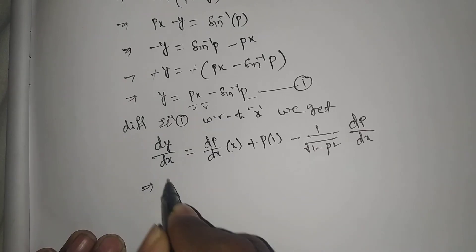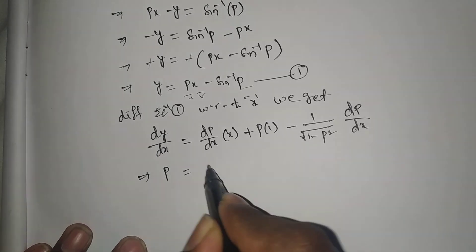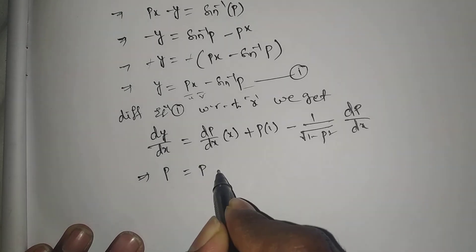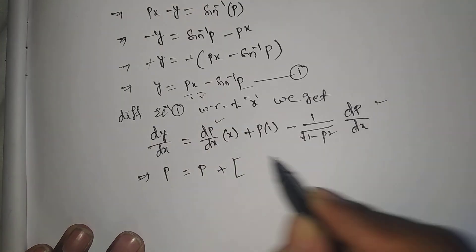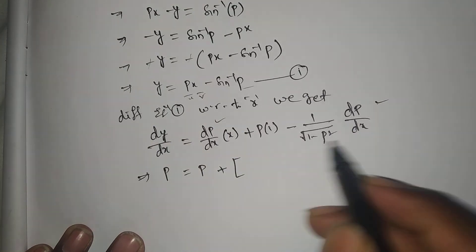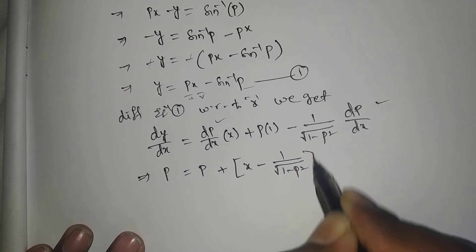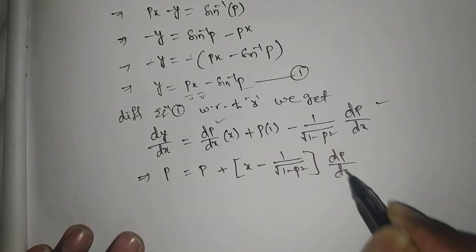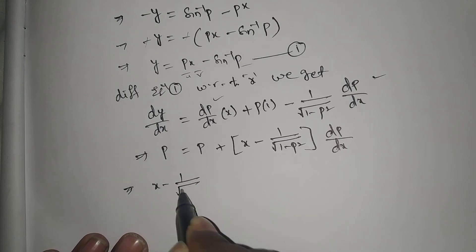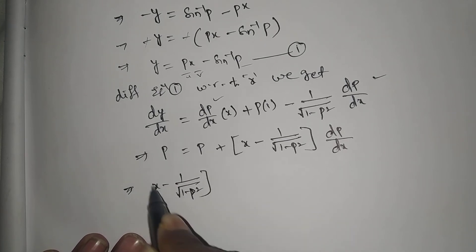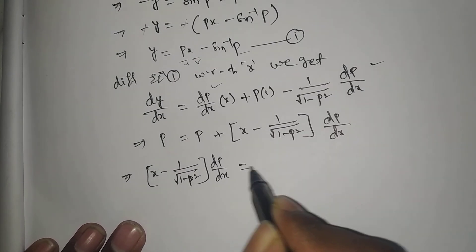Since dy/dx = p, and p cancels with p, we factor out dp/dx. This gives dp/dx times (x minus 1 over root of (1 minus p squared)) equal to zero.